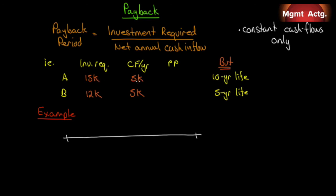Let's look at investment A and investment B. Project A requires $15,000 and will provide $5,000 a year. Project B requires $12,000 and provides $5,000 a year. The payback period for A is $15,000 divided by $5,000, which equals 3 years. For B, it's $12,000 divided by $5,000, which equals 2.4 years. So Project B provides payback in 2.4 years — that's the superior one. But all it tells us is how fast we get paid back.